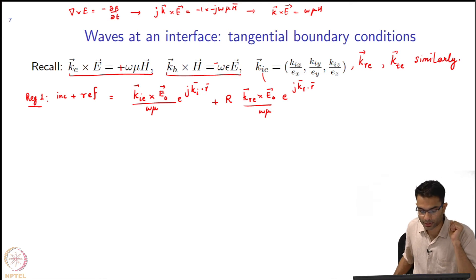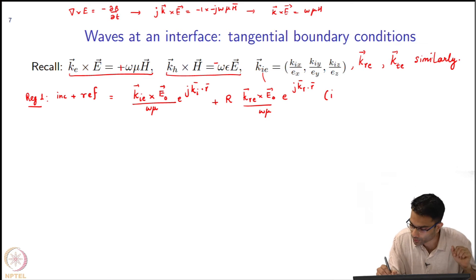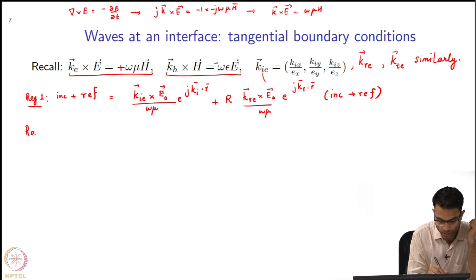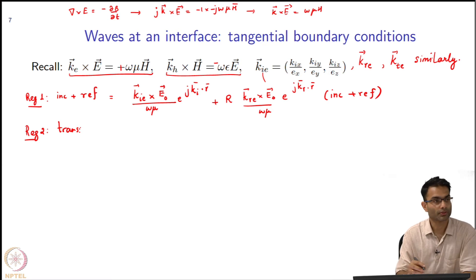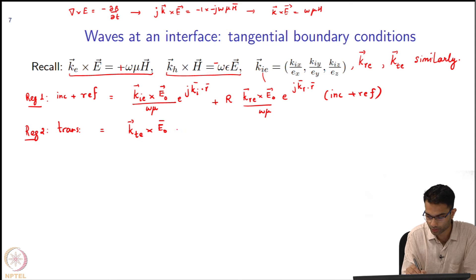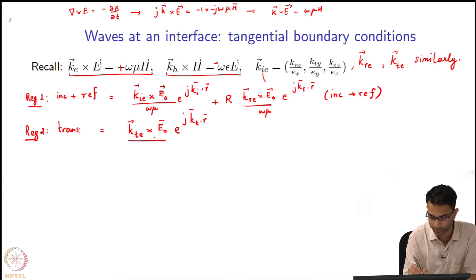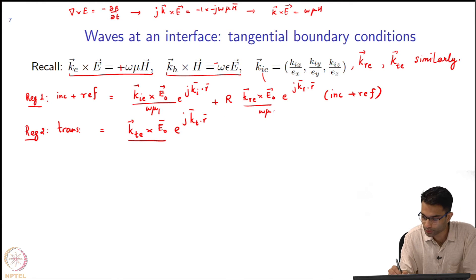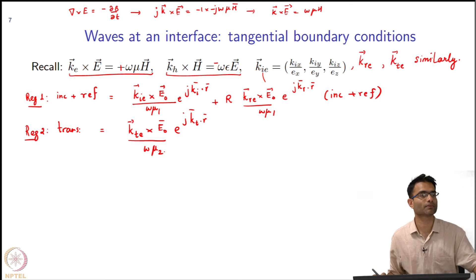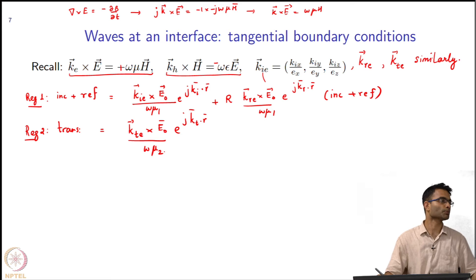This is our incident plus reflected field for the magnetic part, and in region 2 I have only a transmitted field. So this should be very easy to write down.